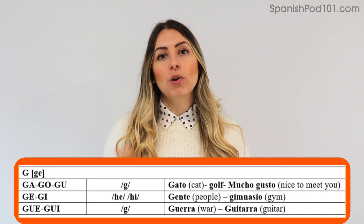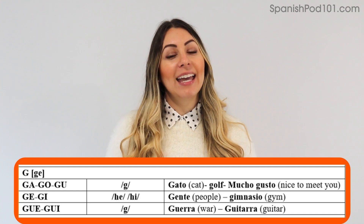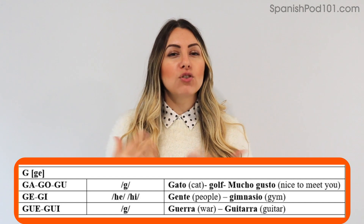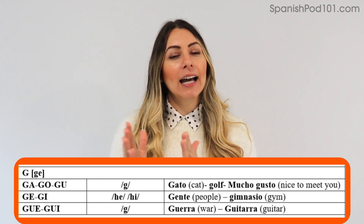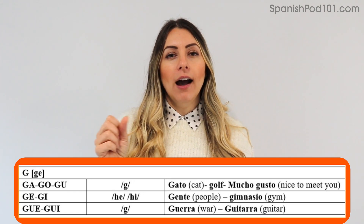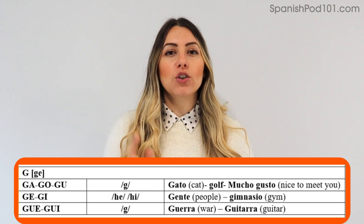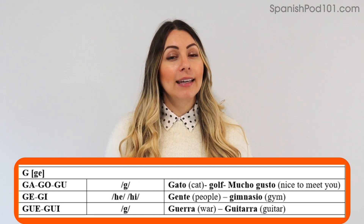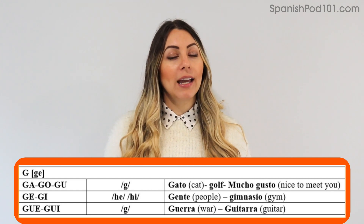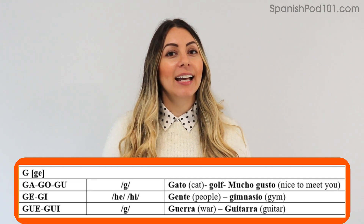Another difference: if we have G-U-E or G-U-I, exactly like Q-U-E and Q-U-I, we're not going to pronounce that U in between. We say gue, gui — not 'guue'. This is how we distinguish the hard G sound before E and I. For example: guerra, guitarra.